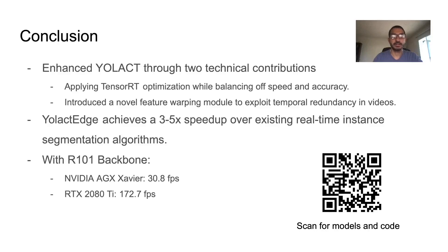In conclusion, we have enhanced YOLACT via two contributions: firstly by applying TensorRT optimization while balancing the speed and accuracy of the model, and secondly by introducing a novel feature warping module that exploits temporal redundancy in videos. Our proposed method, YOLACT Edge, achieves a 3-5x speedup over existing real-time instance segmentation algorithms. Notably, with a ResNet-101 backbone, it is able to run on an NVIDIA AGX Xavier at 30.8 FPS and on an RTX 2080 Ti at 172.7 FPS. Thank you for your attention, and scan the QR code on the bottom right to see our models and source code.